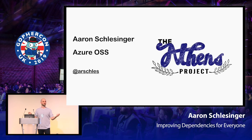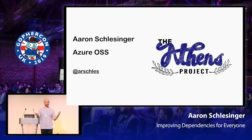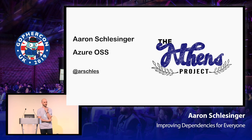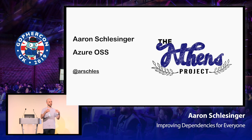I'm here to talk about the Athens project because it's one piece in the puzzle of things that fix this. I'm Aaron. I work at Microsoft on the Azure open source advocacy team. Our primary goal — and this is a little known fact — is to rewrite Windows 95 in Go. So that's what I'm working on in addition to the Athens project.